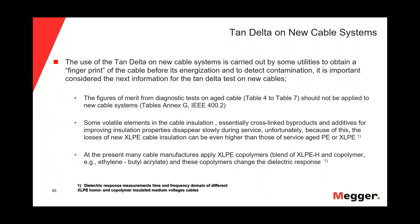To finish the presentation, I'd like to discuss the use of the tan delta on new cable systems. Some customers use the tan delta on new cable systems to get a fingerprint of their cables or to detect contaminants in the insulation. If we do tan delta on new cables, it is very important to keep in mind the following: the figures of merit — the tables in IEEE 400.2, specifically tables 4 through 7 — should not be applied to new cable systems. For new cable systems, we need to use the new cable tables in IEEE 400.2.